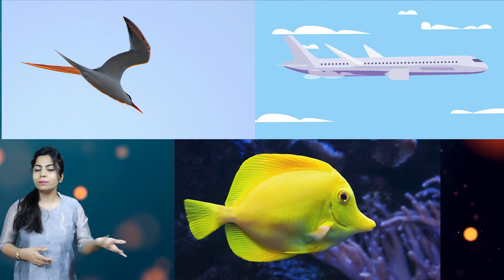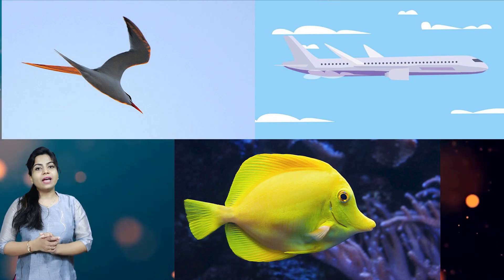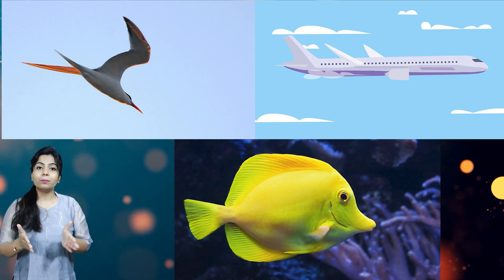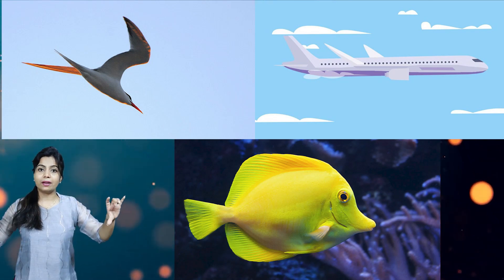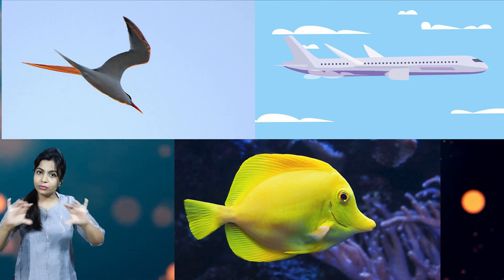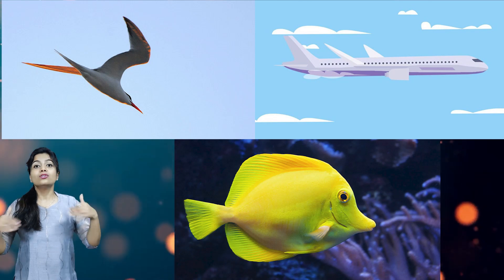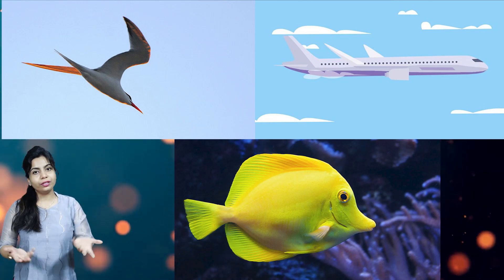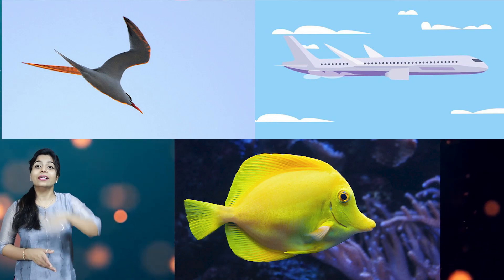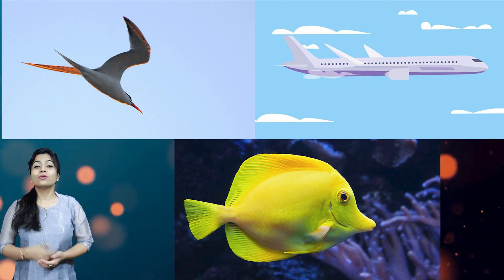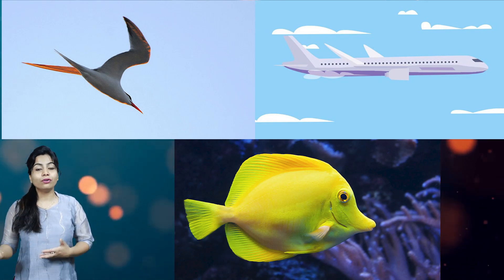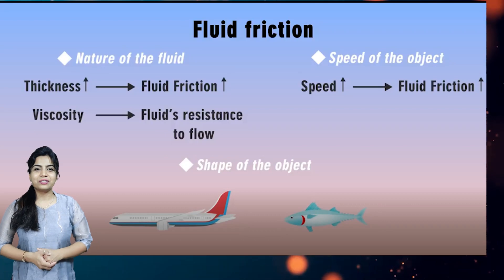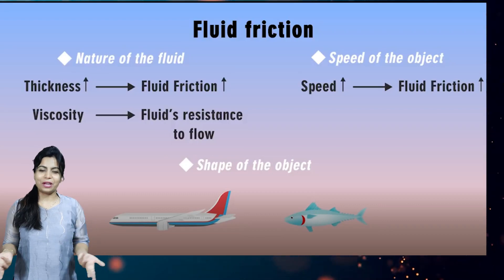Because they have streamlined bodies, the shapes of aeroplanes are also designed in a streamlined manner so that air exerts less friction on the aeroplane and it flies smoothly. So the nature of fluid friction depends on thickness, speed, and shape.